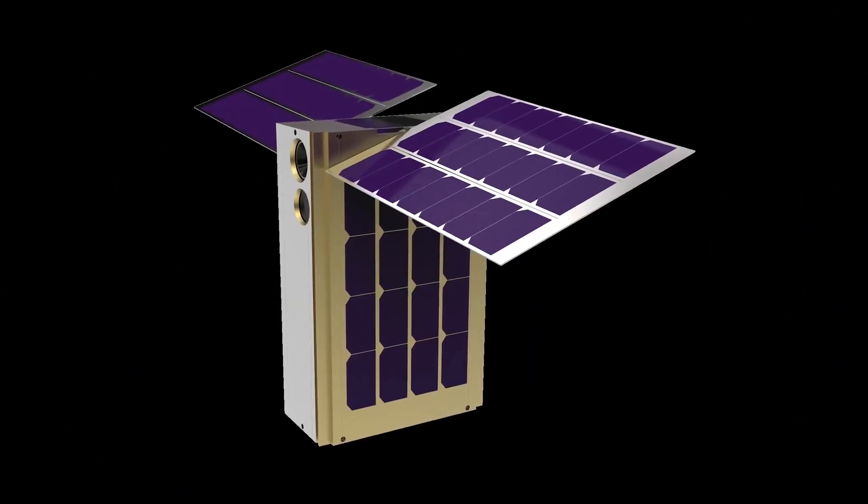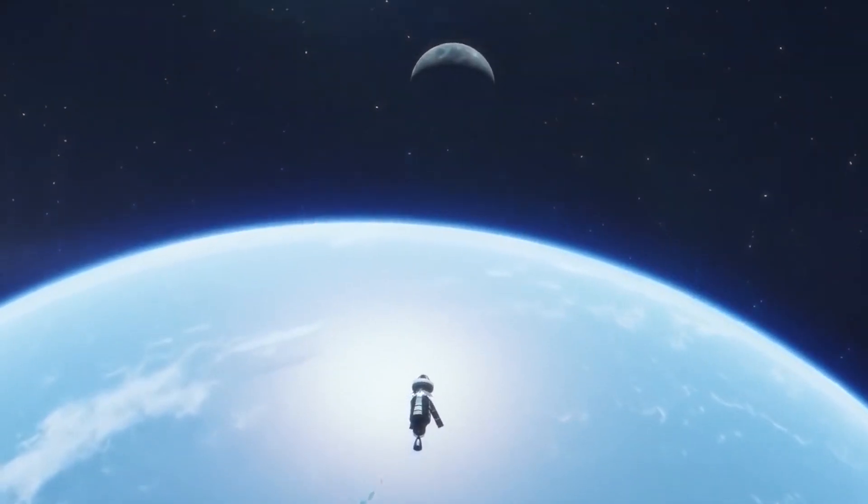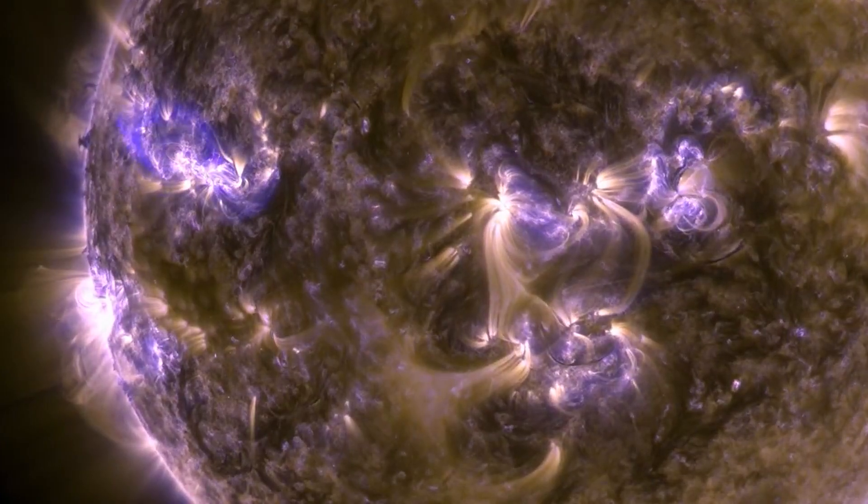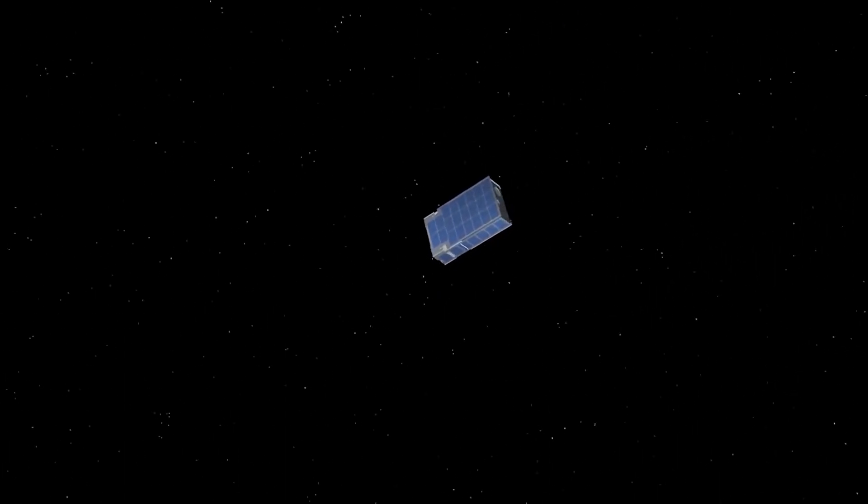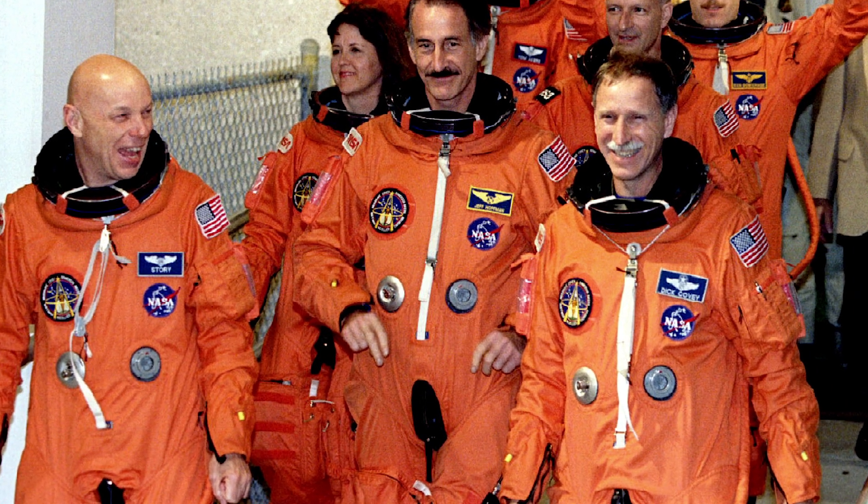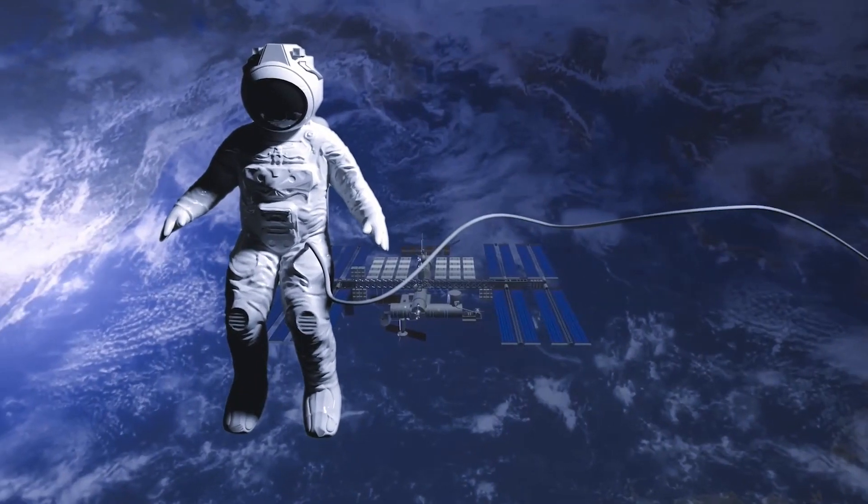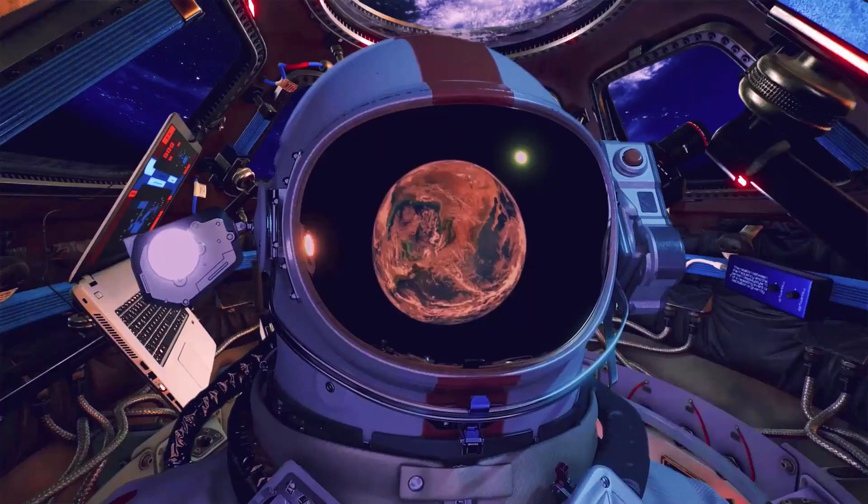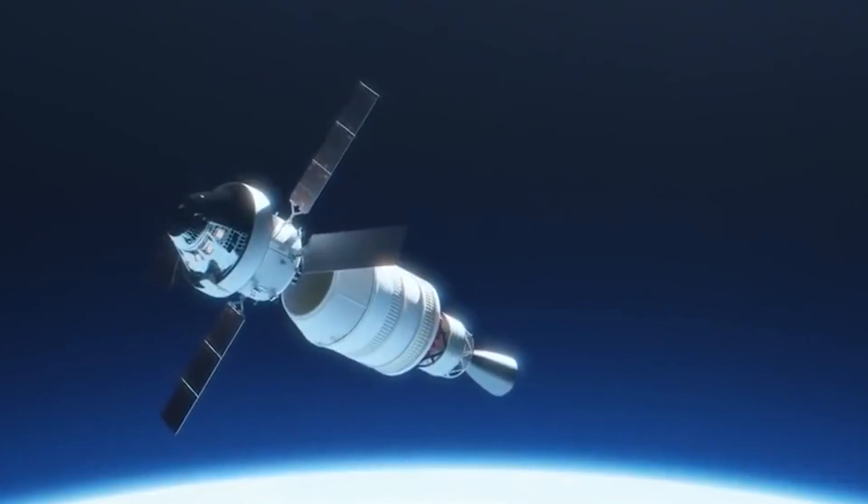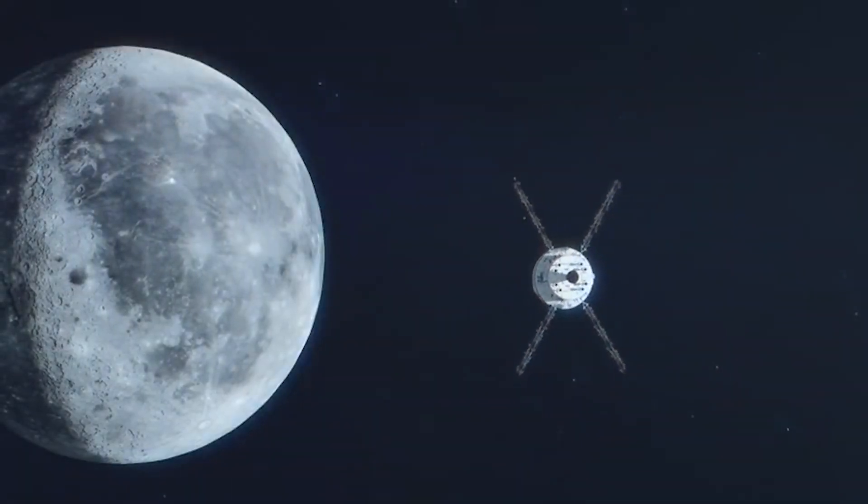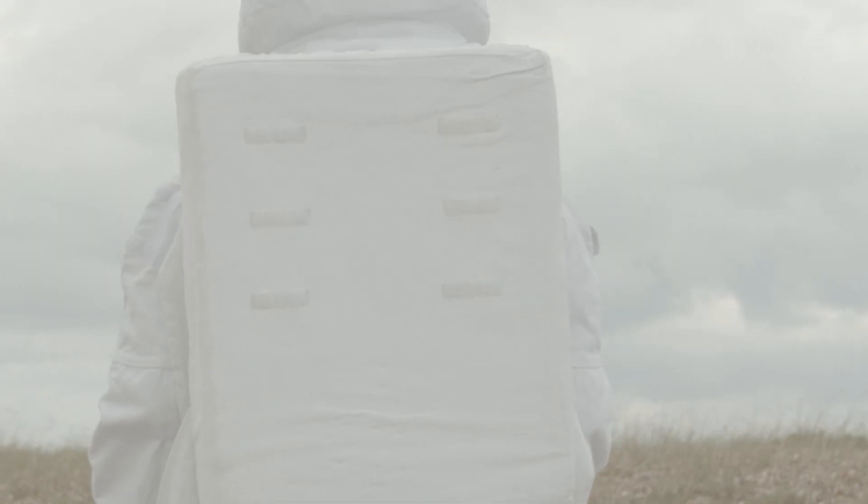Strapped into Orion's commander chair is a mannequin called Commander Moonikin Campos, named for Arturo Campos, the electrical power subsystem manager for the Apollo 13 lunar module, who helped bring that troubled mission safely back to Earth. Moonikin Campos is equipped with two internal radiation sensors, with additional sensors embedded in the mannequin seat to measure vibration and acceleration forces during the mission. The Moonikin is also wearing NASA's new Orion Crew Survival System suit. The orange flight suit resembles similar suits used during space shuttle missions but features a plethora of upgrades. Orion's flight suit is designed to be worn for up to six days and features a feeding tube access port on the helmet so astronauts don't have to depressurize their suits to eat. The suit's familiar orange color allows rescue teams to more easily spot astronauts in the event of an in-flight emergency. Once assembly begins on suits for real astronauts, each will be custom-built for the wearer, as opposed to the comparable one-size-fits-most suits from the shuttle era.